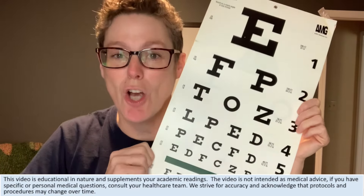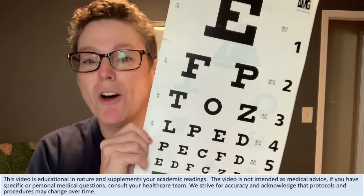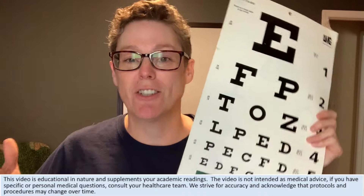Today we are talking about visual acuity and this is known as the Snellen chart. I'm going to talk to you about how to set it up, what all these numbers mean, and when you should see an eye doctor.